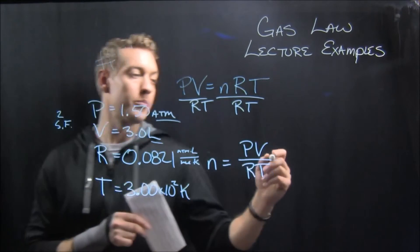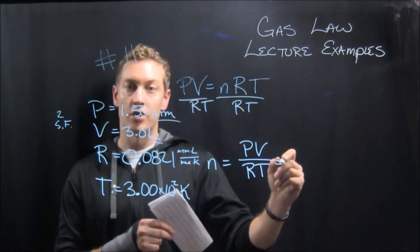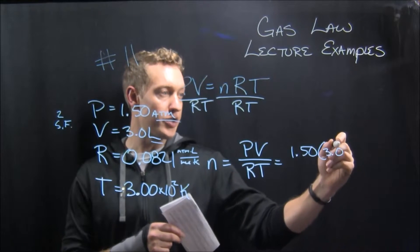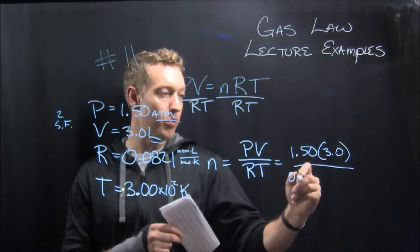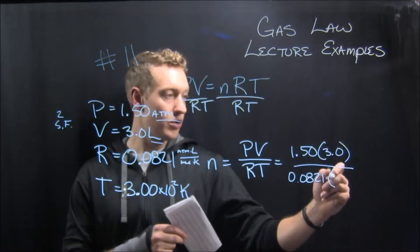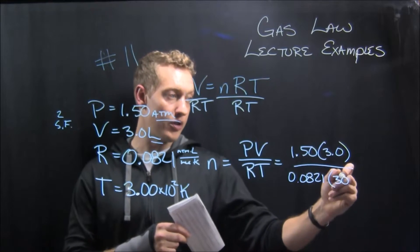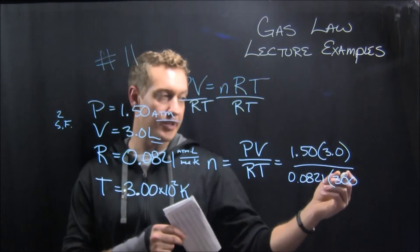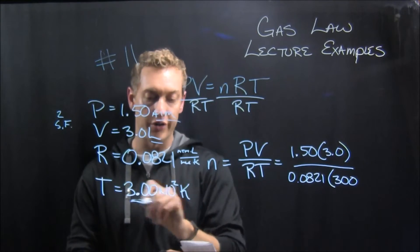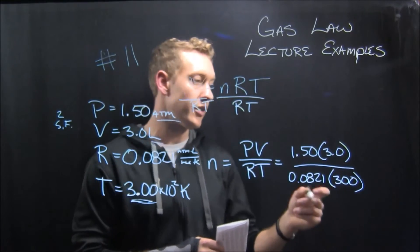And then we'll go ahead and plug that into the equation. So 1.50 times 3.0 divided by 0.0821 times, I'm just going to call it 300, because that's what 3 times 10 to the second is. And that, though, is 1 sig fig. I know that this is 3 sig figs, so then I can keep that.